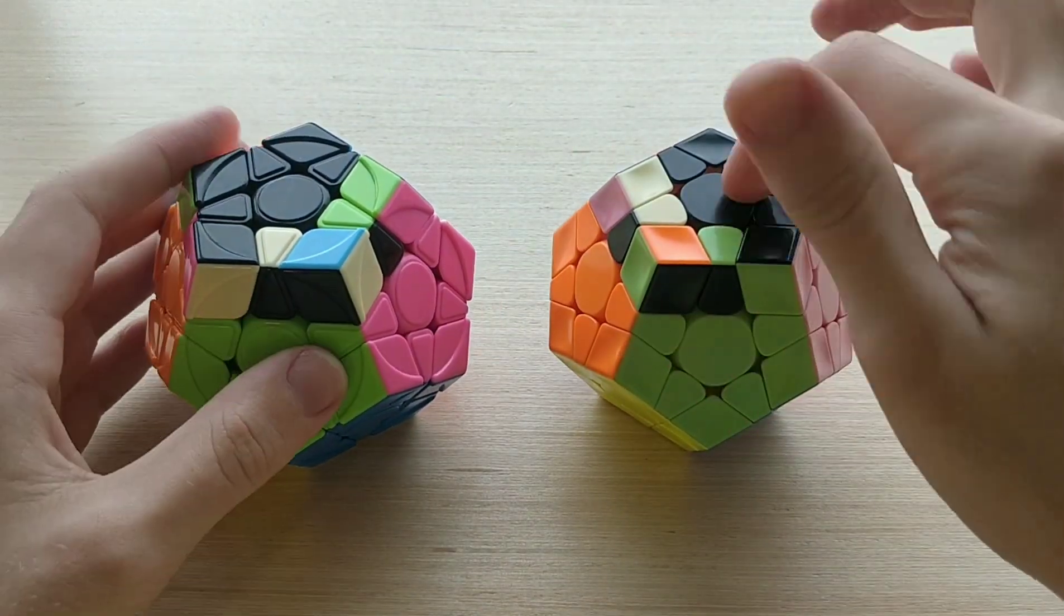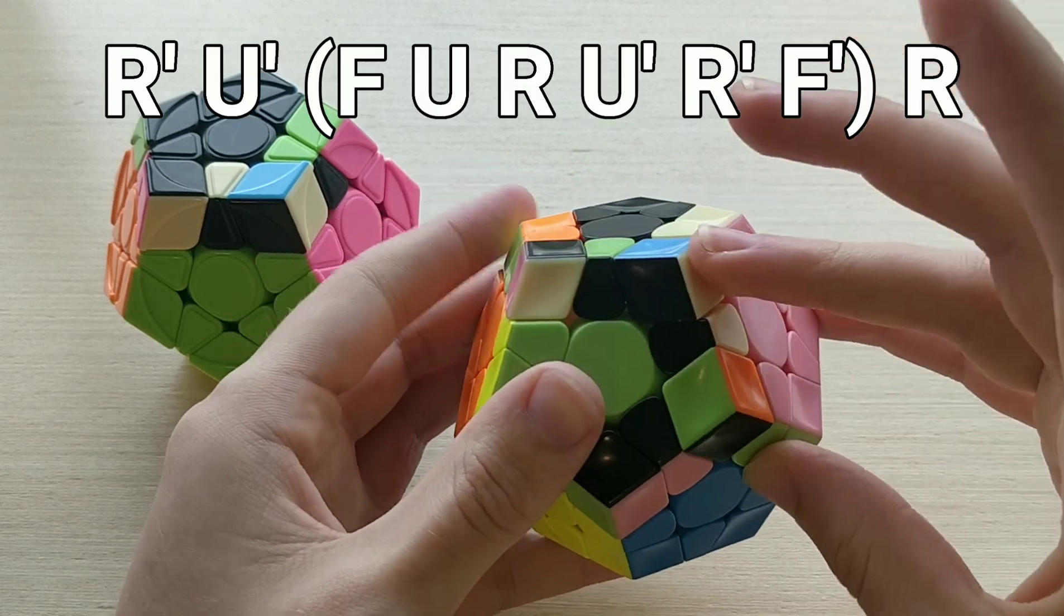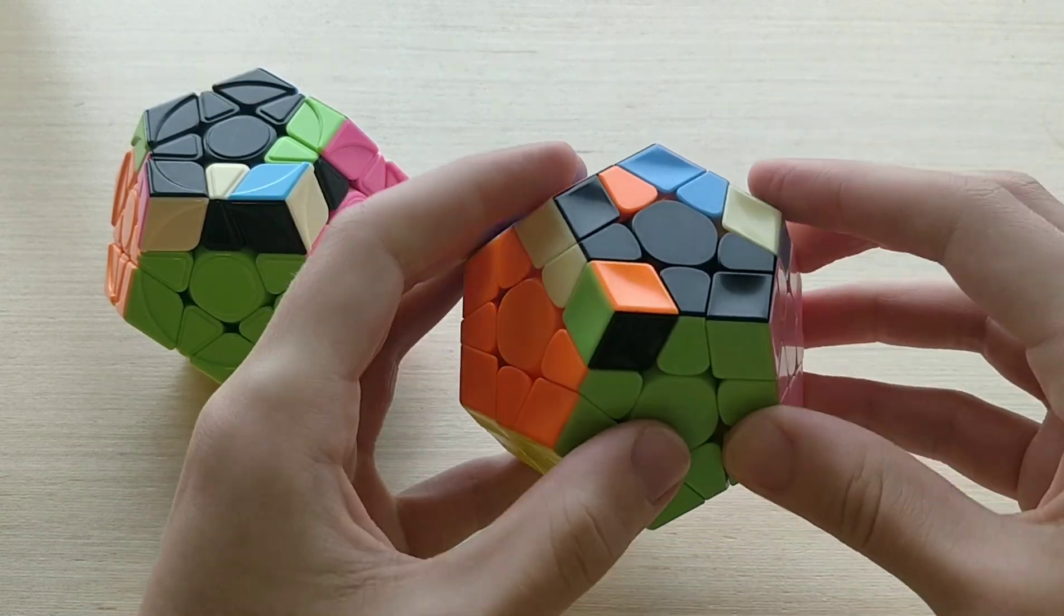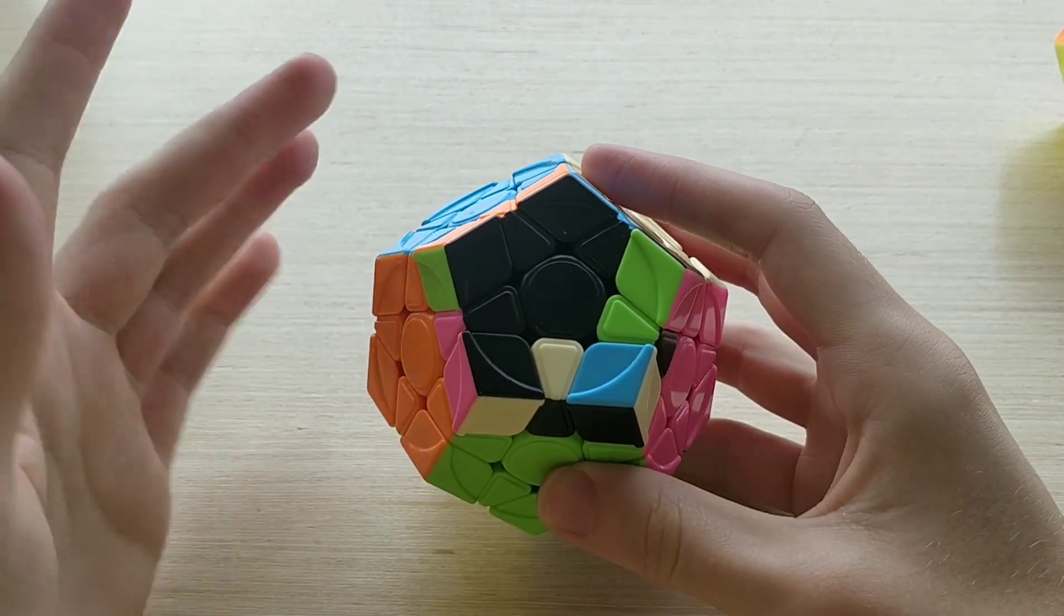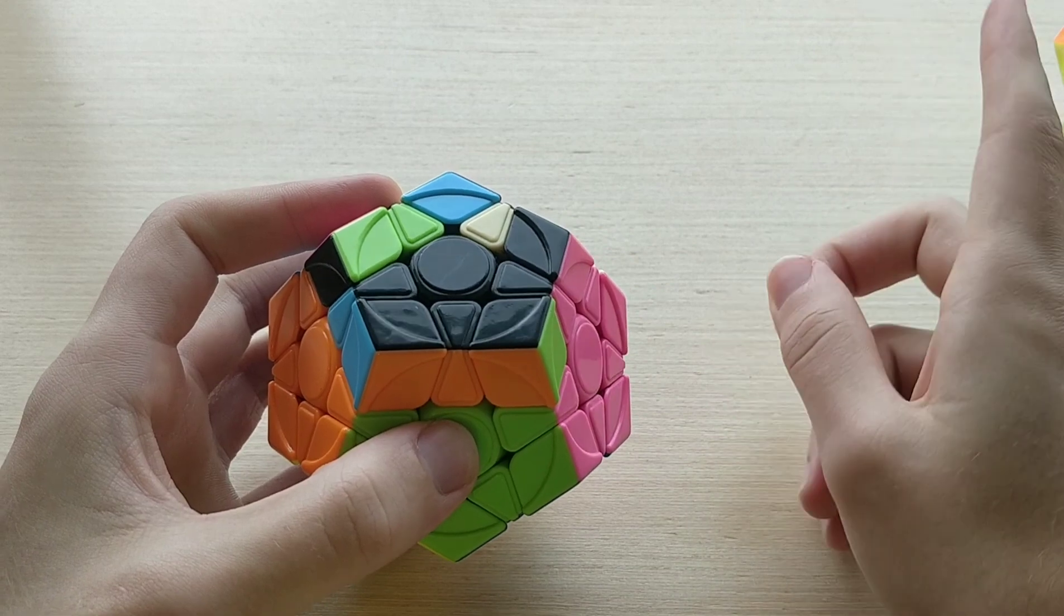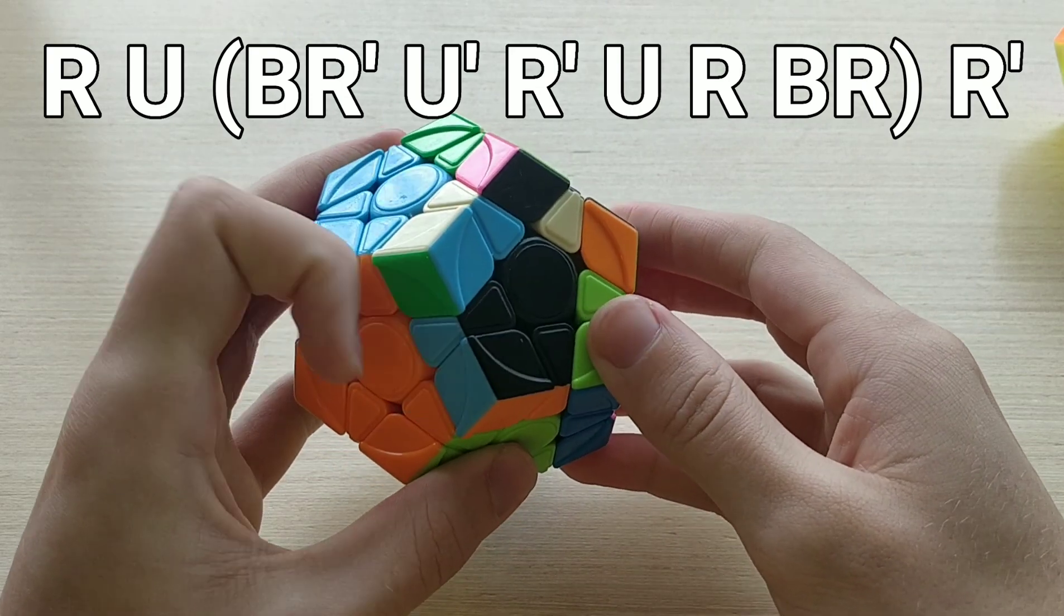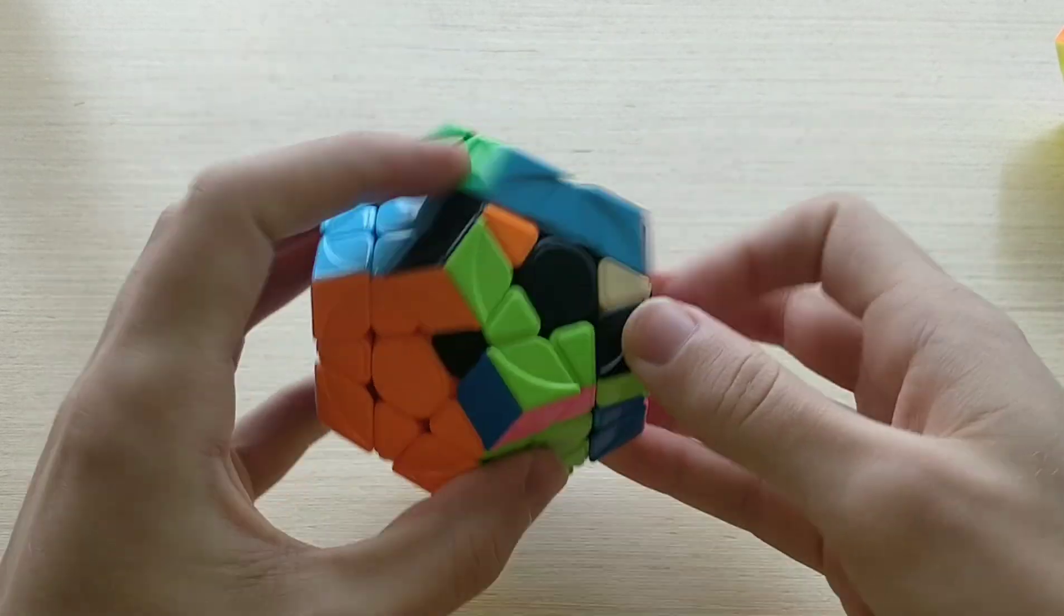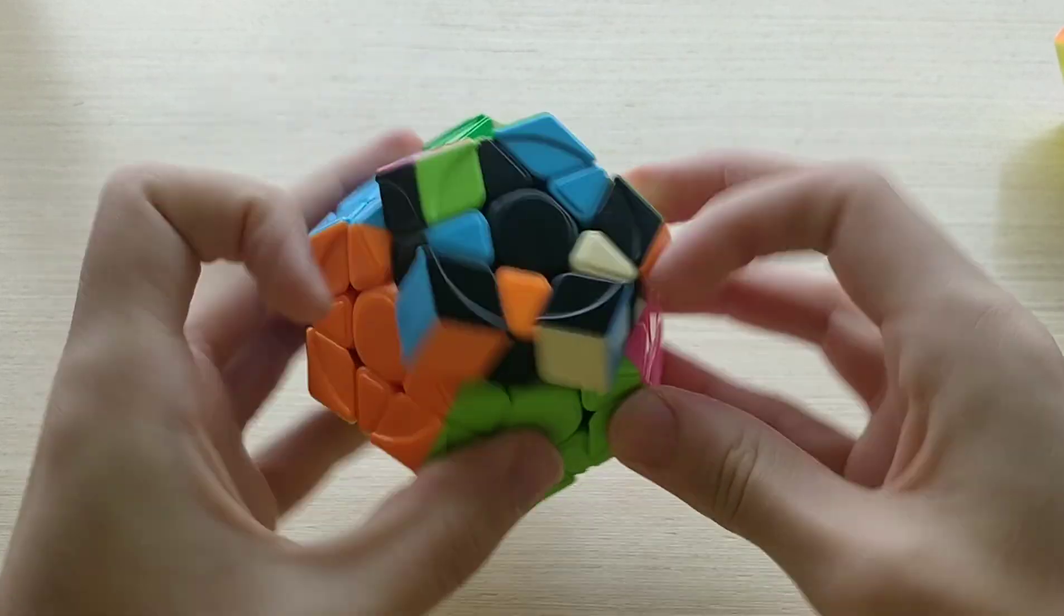Anyway, here I'm going to start with 24b-, so this is, again, just a 3x3 ALG and it looks like this. r prime u prime f u r u prime r prime f prime r. So like that. And then 24b+. Again, this is a 3x3 transfer, like some people use this, I think Felix might use this ALG on 3x3, but I think most people don't. So if you don't, it's just the back mirror of that previous ALG I just showed, which looks like this. r u b r prime u prime r prime u r b r prime. So like that. There you go.